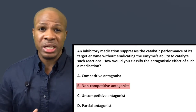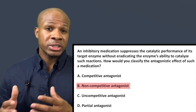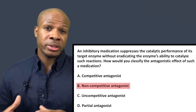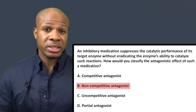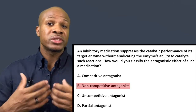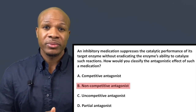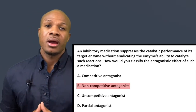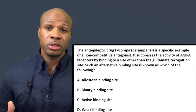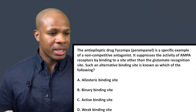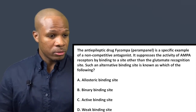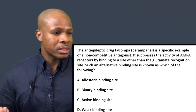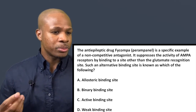Answer choice D says partial antagonist, which is not really a standard term. There is a term for partial agonist — a partial agonist is a drug that can stimulate the activity of an enzyme but not to its full potential. So answer choice D is incorrect. The correct answer is B, non-competitive antagonist. Let's go on to question number two.